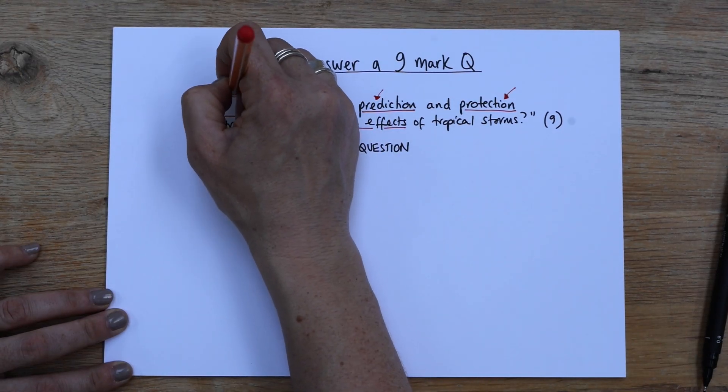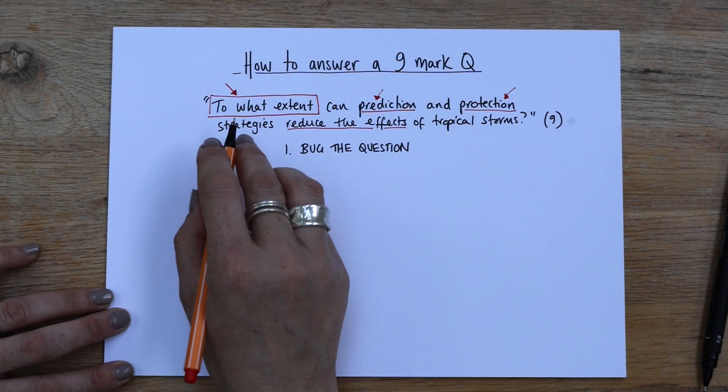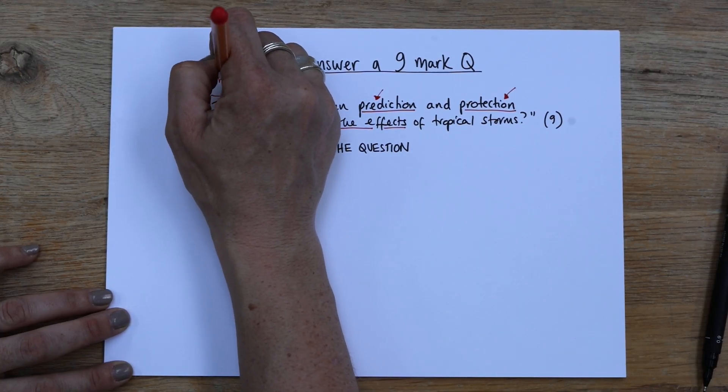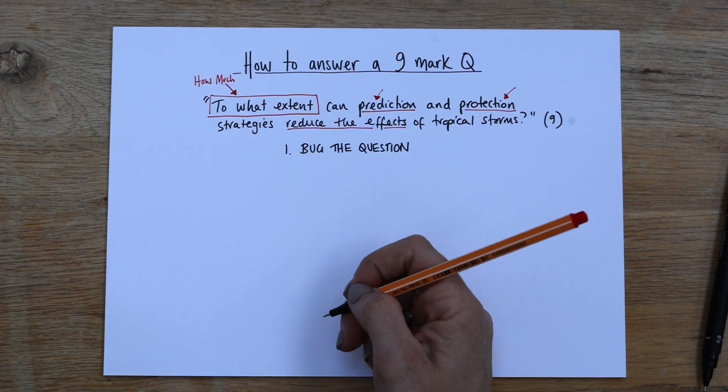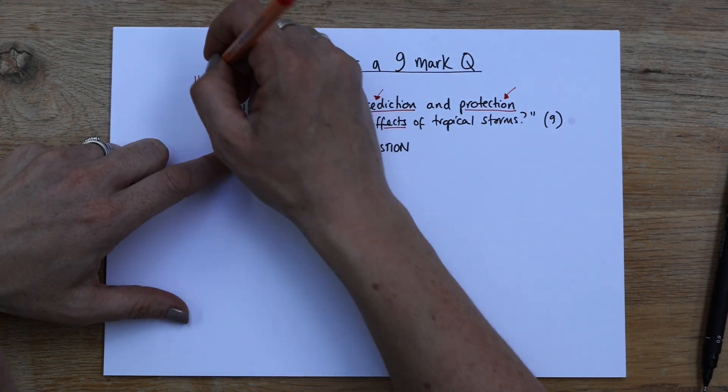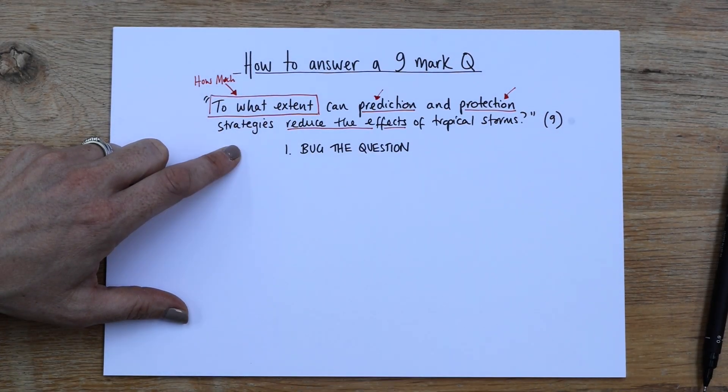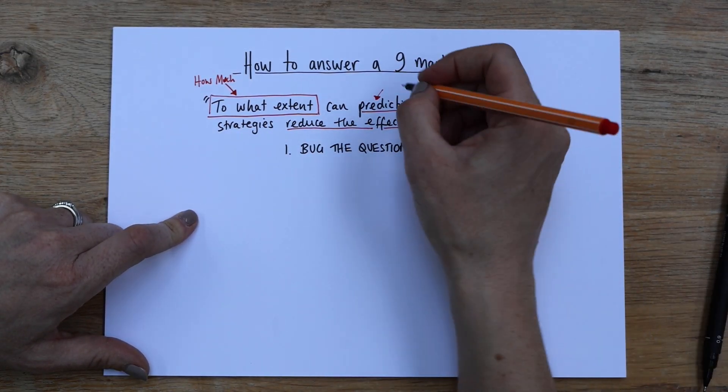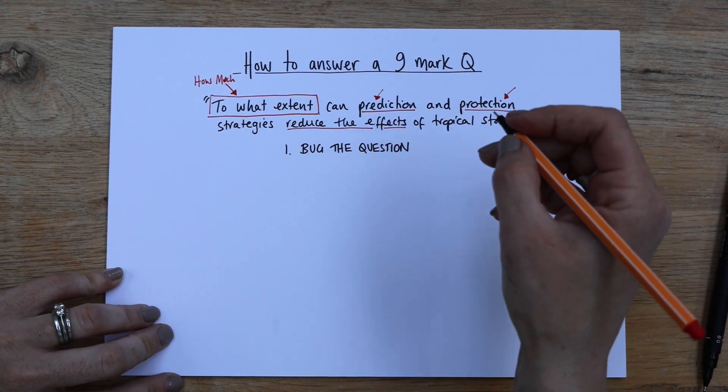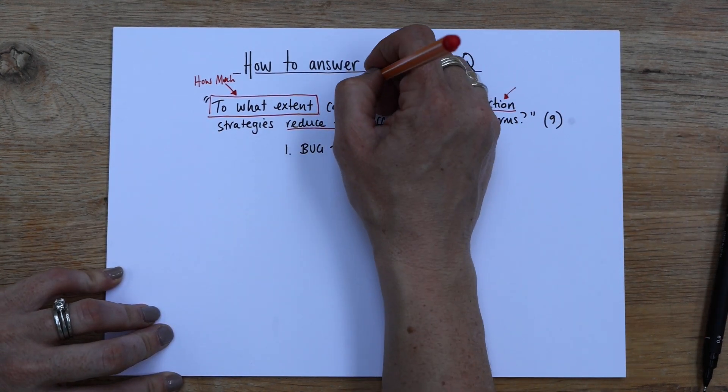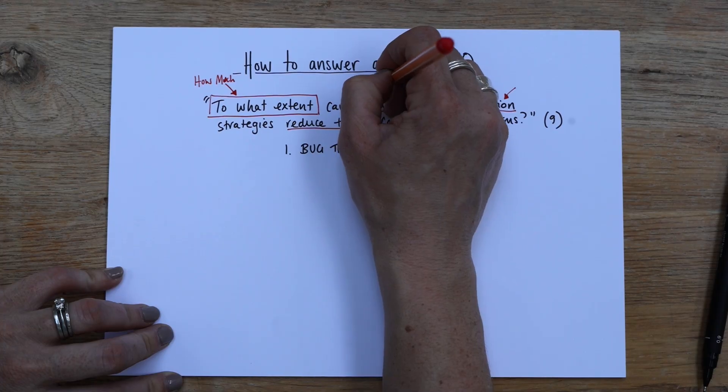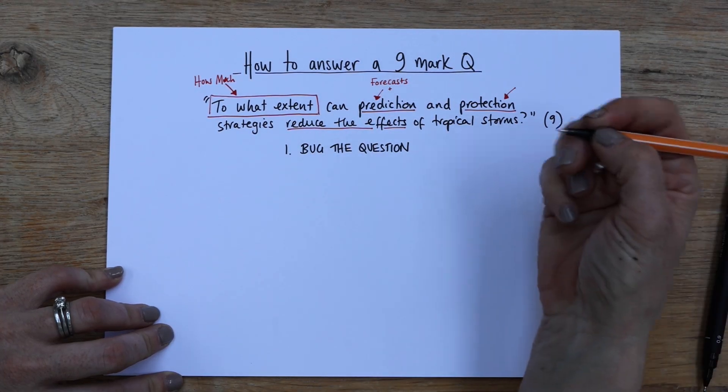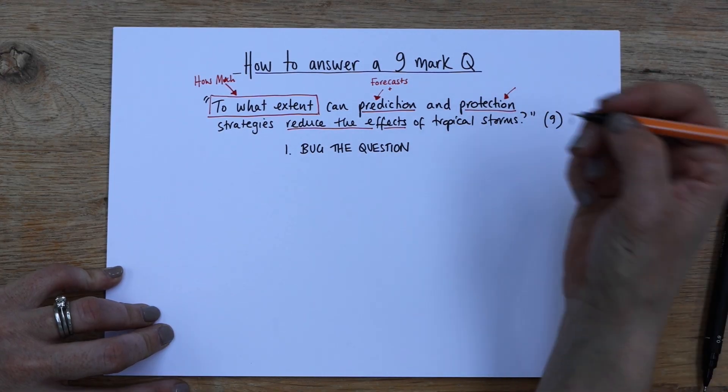This is more how I do it in the classroom, is I'll draw and I'll write around it. So we're going to draw an arrow to protection, a little tiny arrow to prediction as well. We're going to draw an arrow to what extent. So it's a to what extent, which means how much. So write how much. How much can prediction and protection basically save people's lives. So prediction strategies are things like forecasts, kind of forecasting really three to five day forecasts, satellite images, computer modelling.